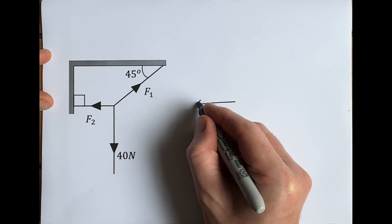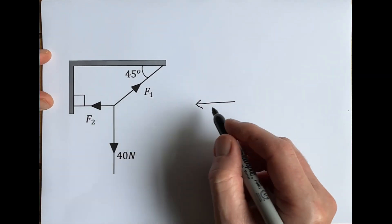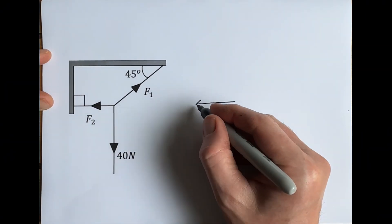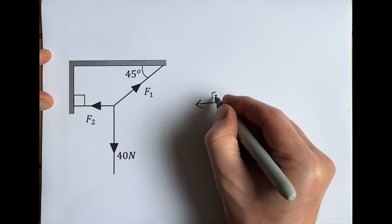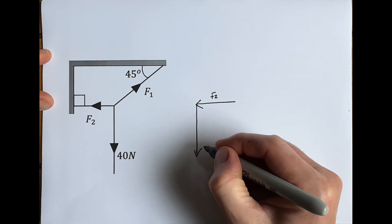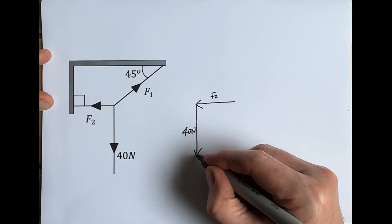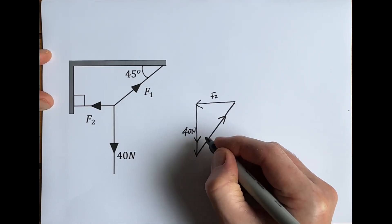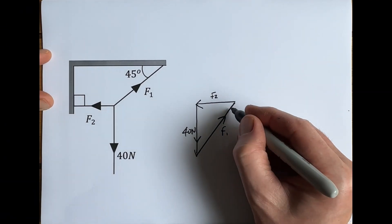We can assume that they're going to line up as a vector triangle with no resultant force. The way we do that is to make a vector triangle—we take each vector in turn and line them up head to tail. So this is the head of the vector, that's the tail. This one here will be F2, this one here will be the 40 newtons, and then this one here is F1.